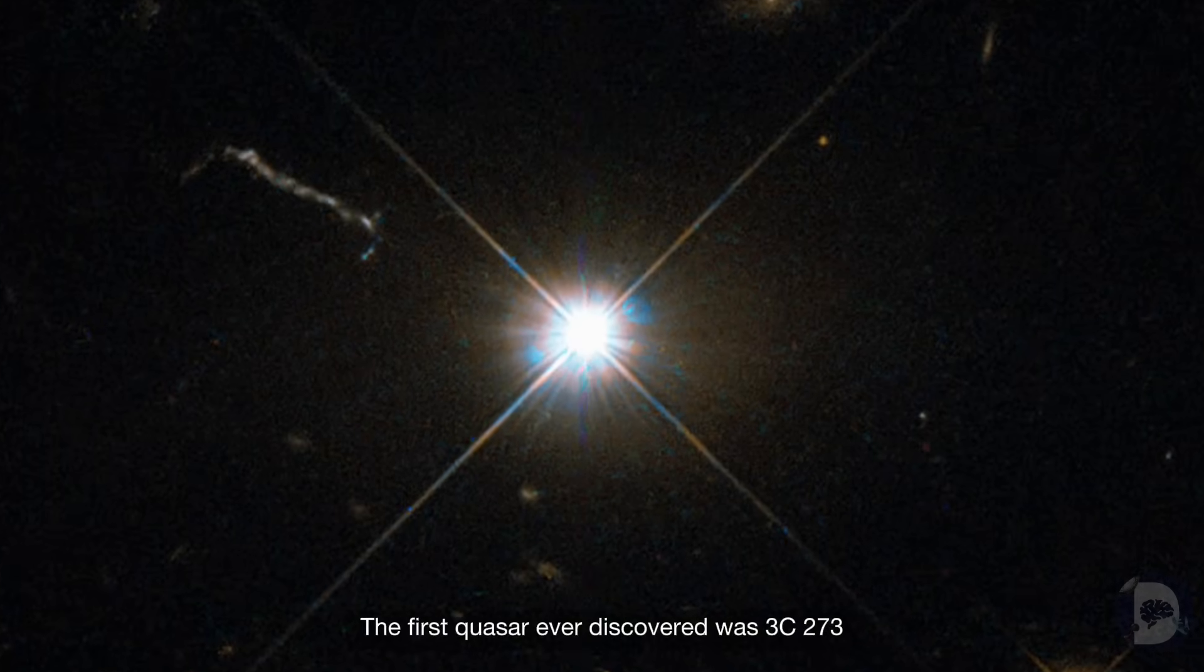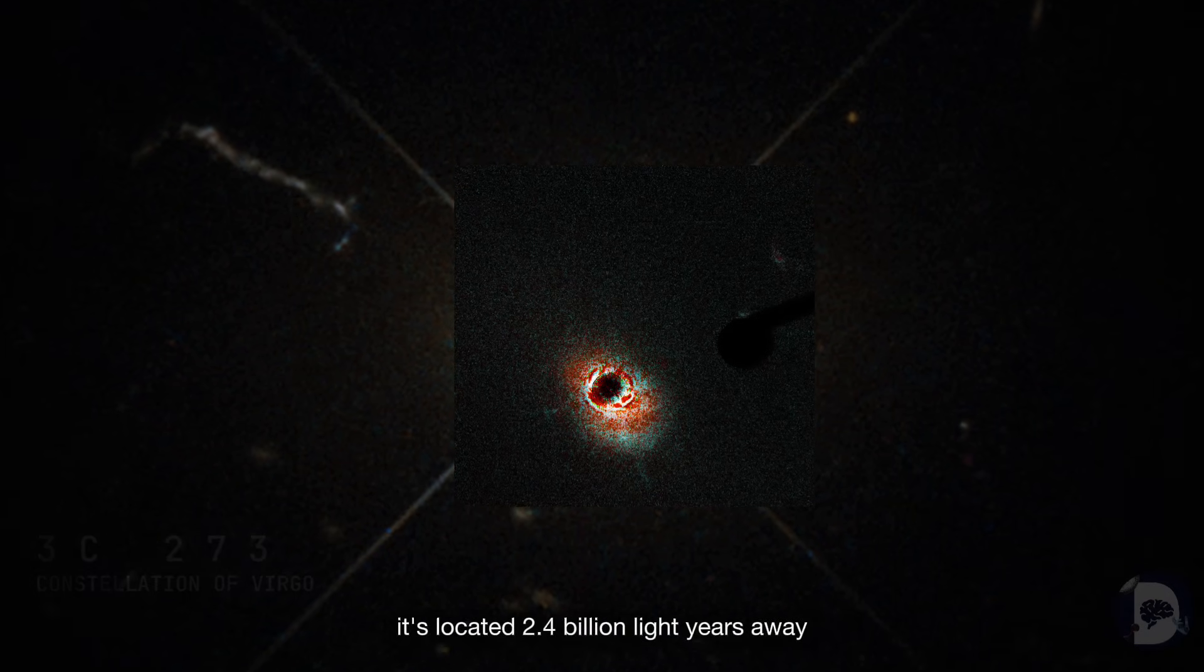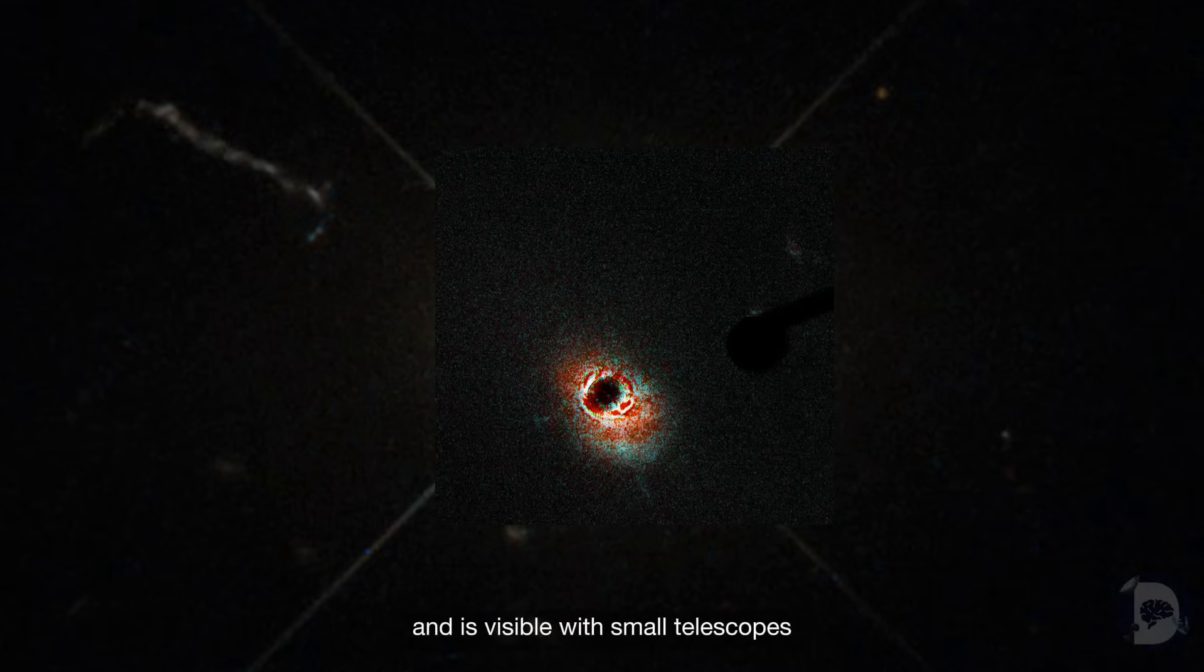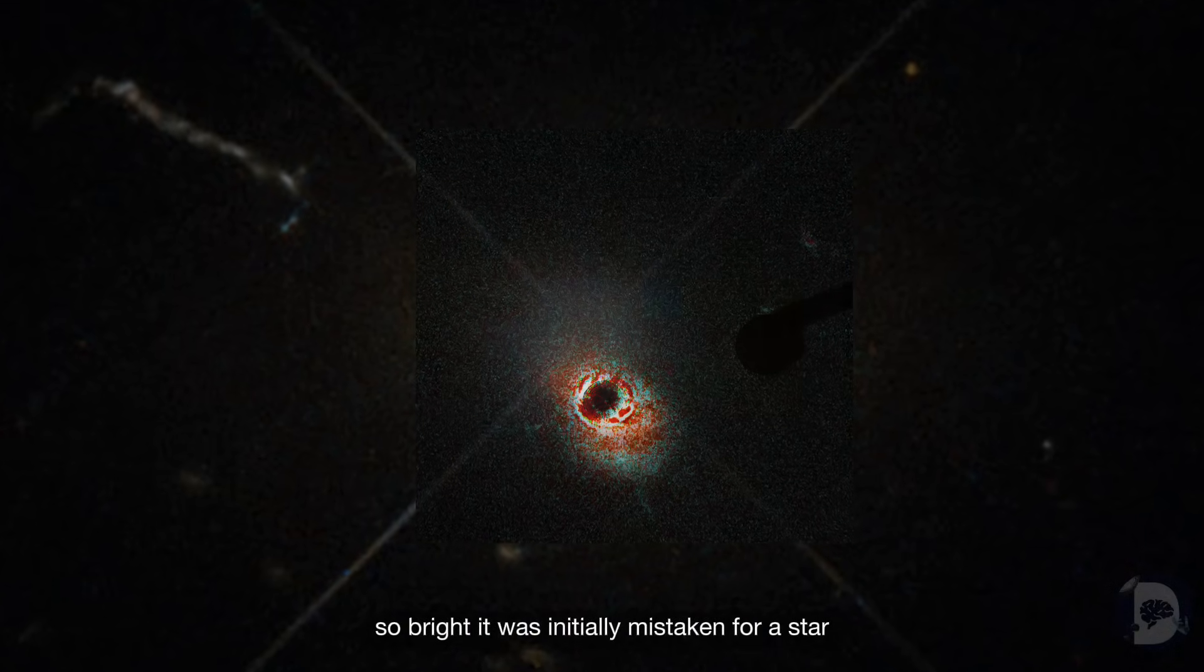The first quasar ever discovered was 3C273. It's located 2.4 billion light-years away in the constellation Virgo and is visible with small telescopes. So bright it was initially mistaken for a star.